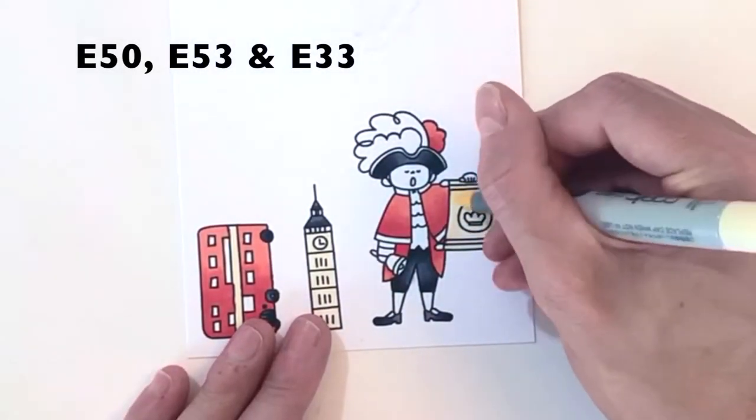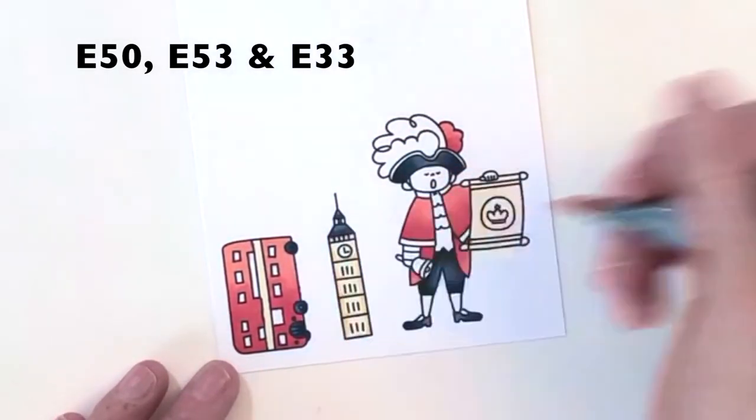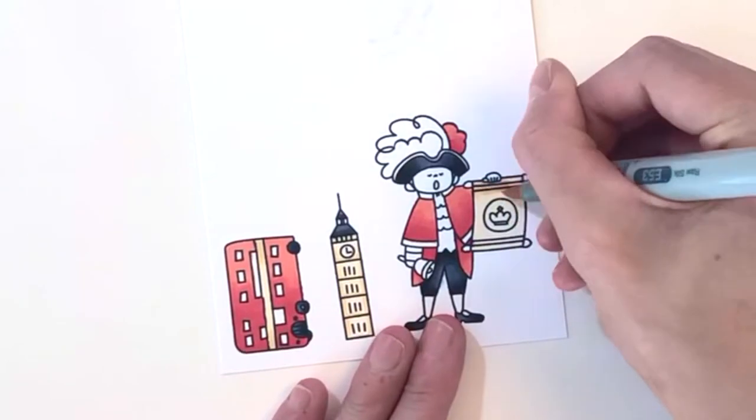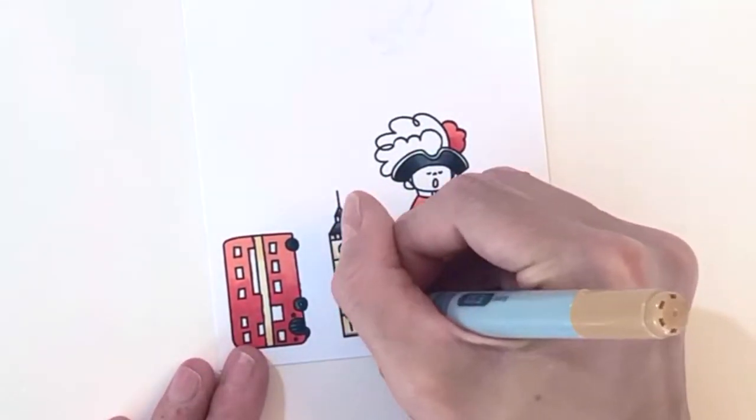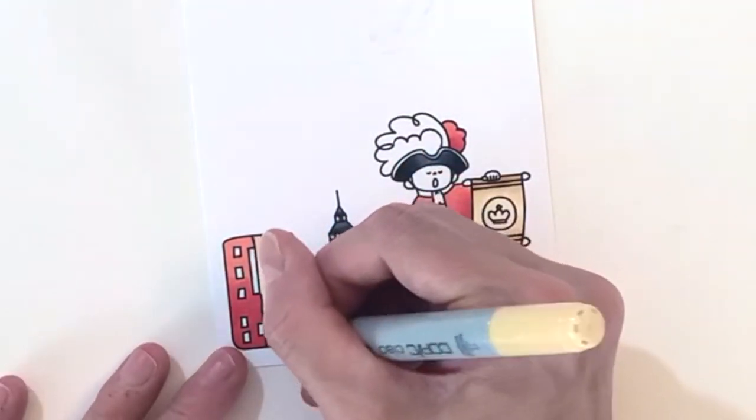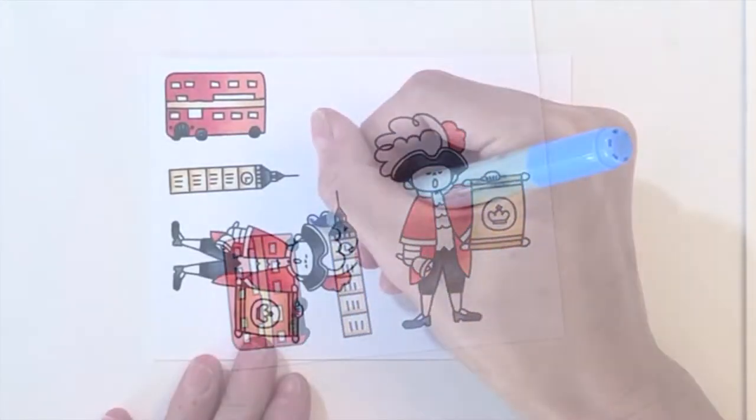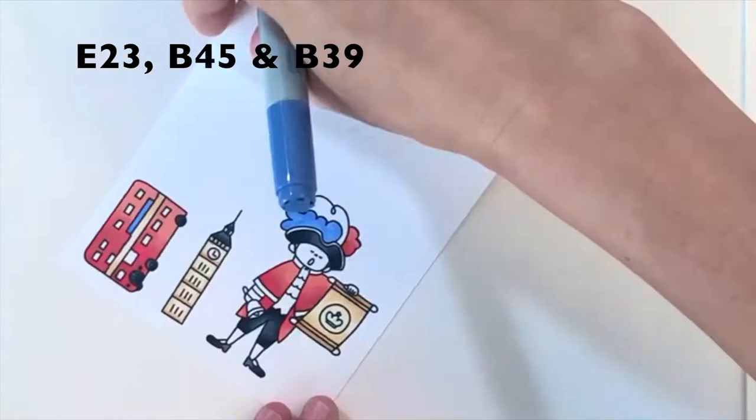Now I'm moving on to my cream colors. I'm using these three cream colors for Big Ben, the scroll, and that stripe that I created on the double-decker bus. Because these areas are pretty small and the colors are pretty light, I really don't end up doing too much blending. I basically just use my darkest on some of the lines on Big Ben just to add a little shadow.